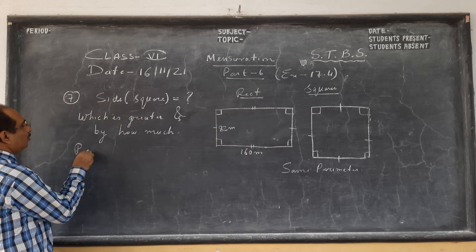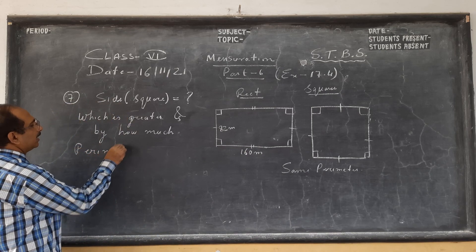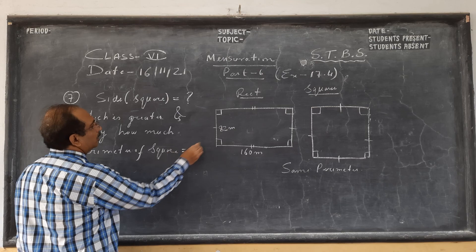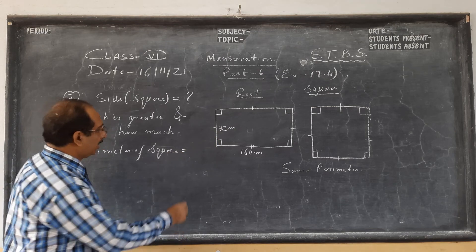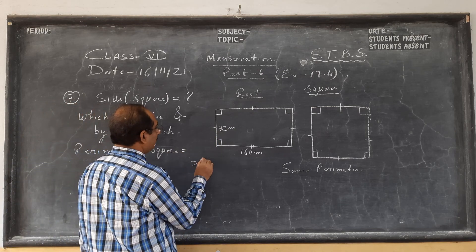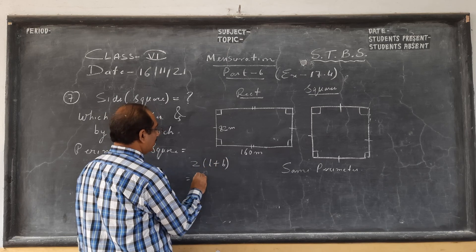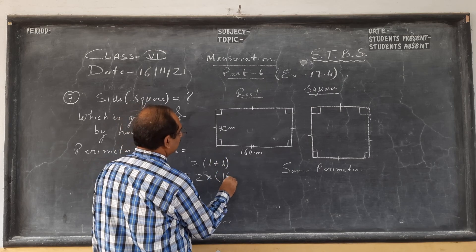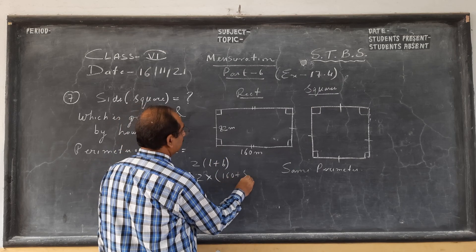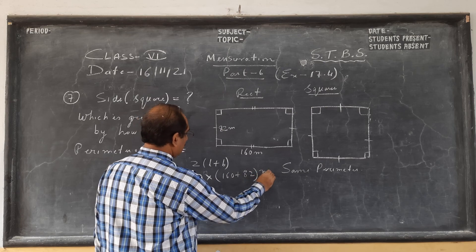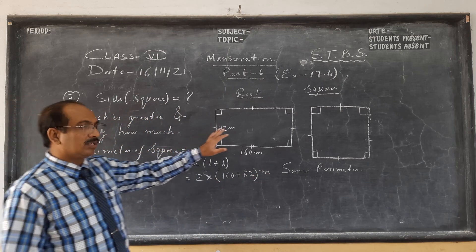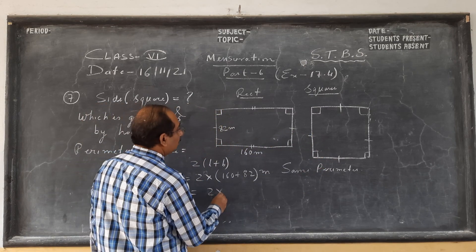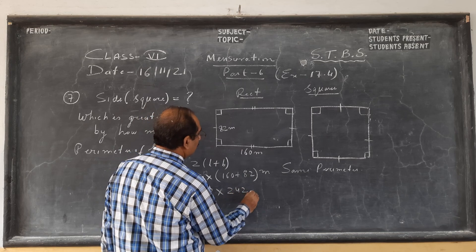So let us see. Perimeter of square is equal to perimeter of rectangle. The length is 160 plus 82. This many meters is the perimeter of the rectangle, which is equal to the perimeter of the square. So let us solve this: 2 into 242 meters.